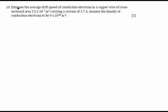In this example, it is being asked to estimate the average drift speed of conduction electrons in a copper wire of cross-sectional area 2.5×10⁻⁷ m². Being a numerical problem, we start writing whatever is given.